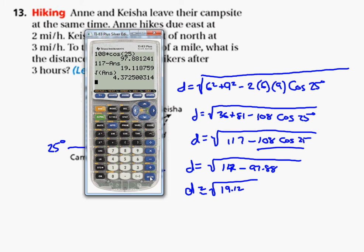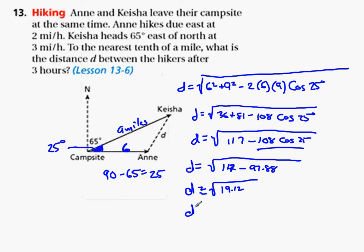So we take the square root of that answer, and we wind up getting 4.37. So 4.4 if we go to the nearest tenth. So D is approximately 4.4 miles.